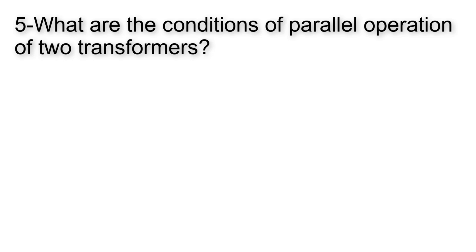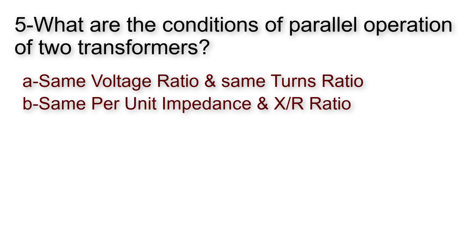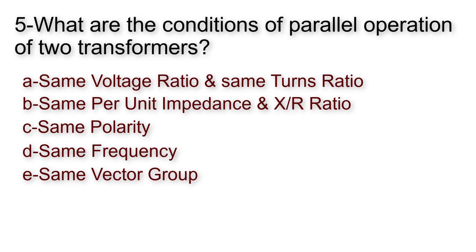The first condition here is transformers must have the same voltage ratio and turns ratio, then same per unit impedance and X over R ratio, same polarity, same frequency, same vector group, same phase sequence, and at last identical position of tap changer.